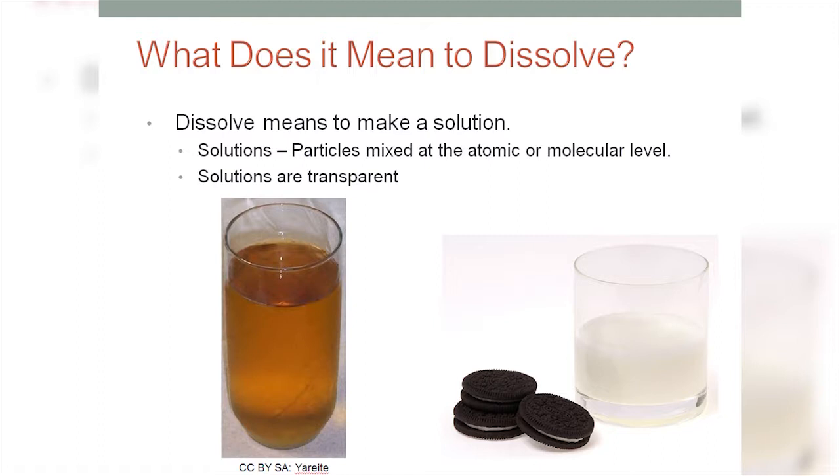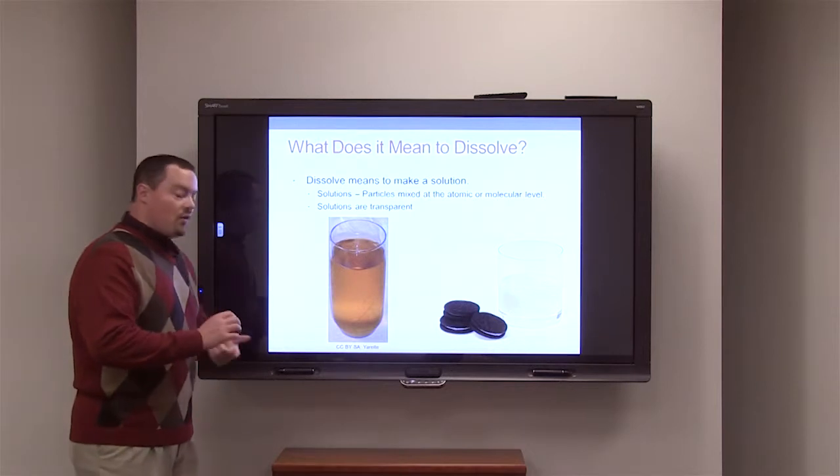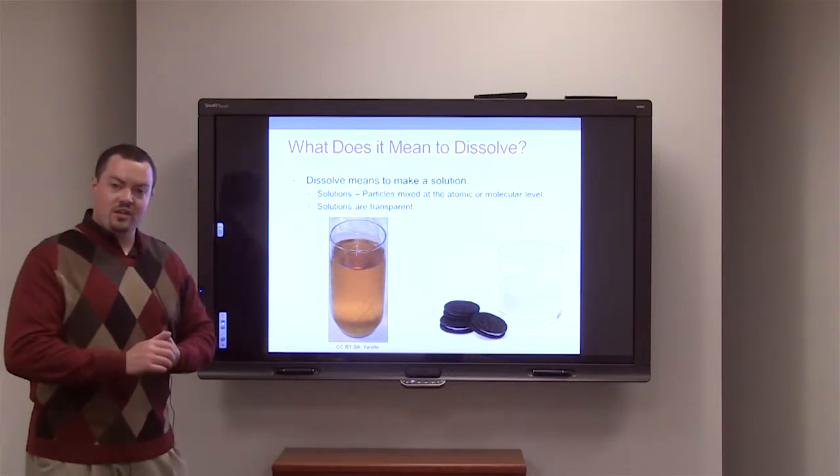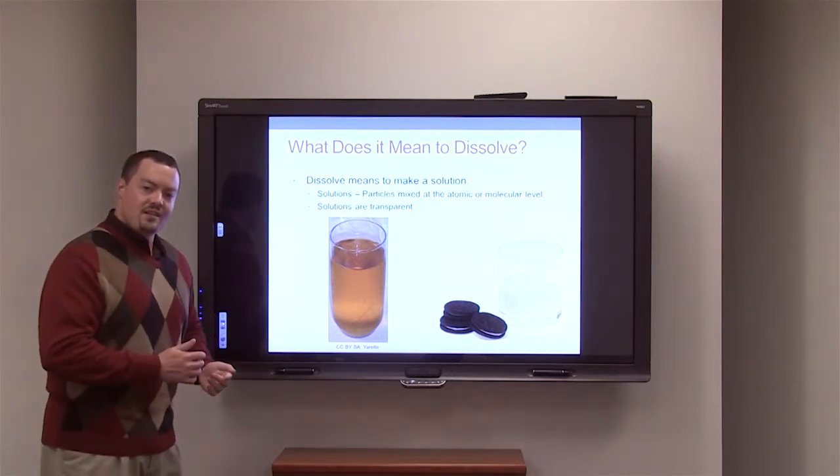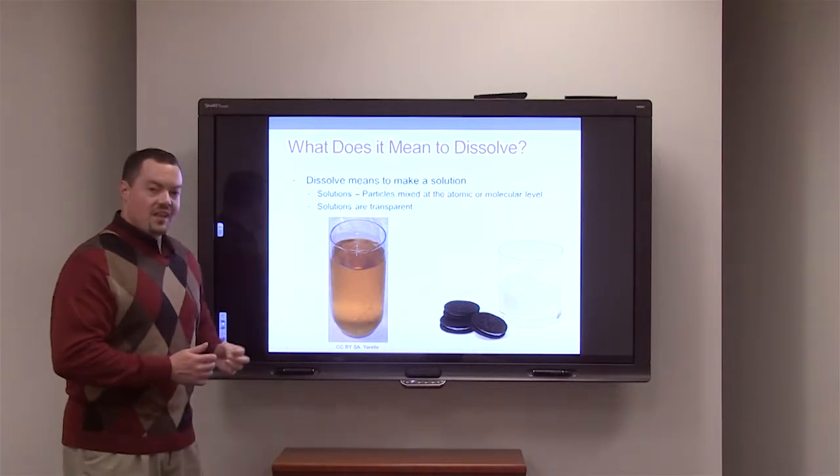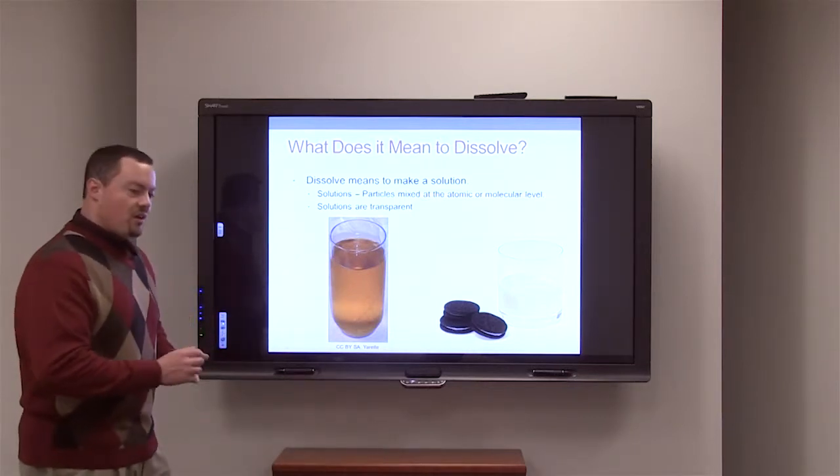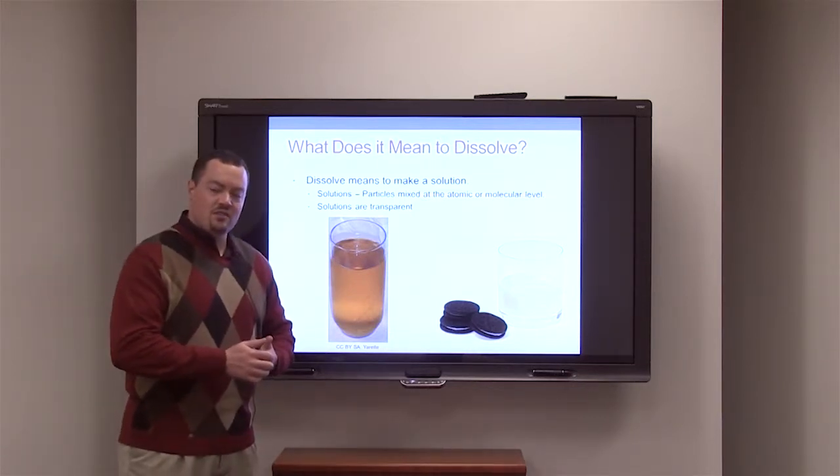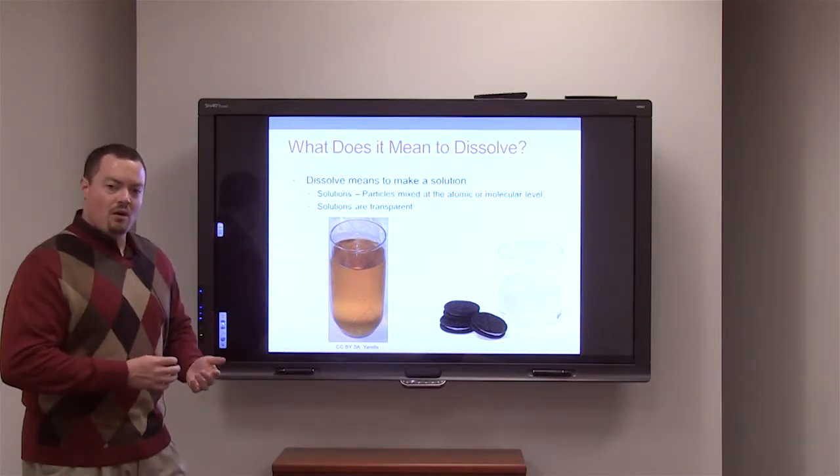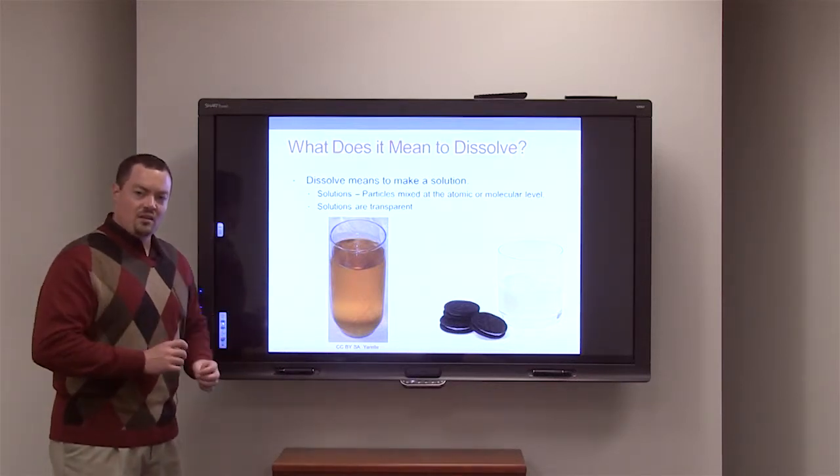Now, you see down here we have a few figures. First of all, we have apple juice. So apple juice, even though it has color, it is still transparent. So that tells us that it is a solution. On the other hand, something like milk, milk not being transparent is not a solution. Meaning the particles that make up the milk are not mixed at that atomic level.